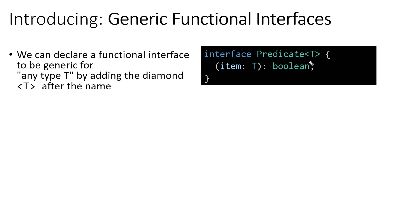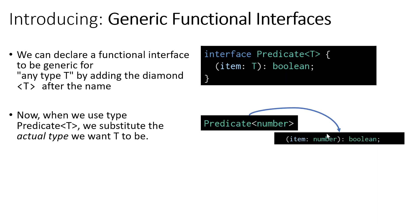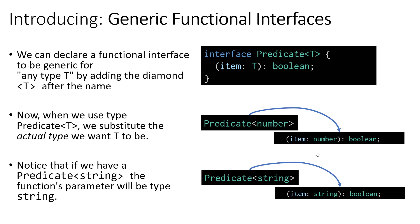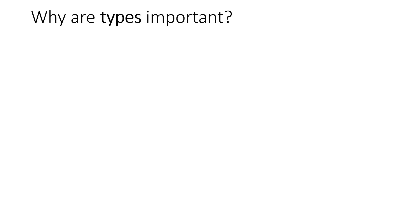The item parameter can be any type T. That means we can have a Predicate for any type — a string predicate where item would need to be a string, or a number predicate where item would need to be a number. Something of type Predicate<number> would be any function that has a number as its only parameter and returns a boolean; similarly Predicate<string> would take a single string parameter and return a boolean.